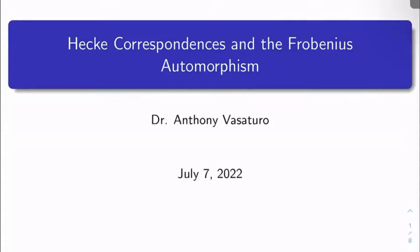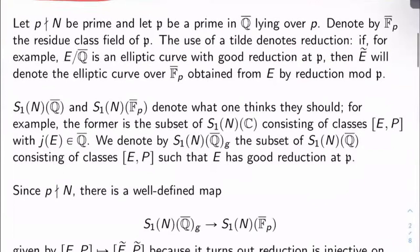We'll start by looking at the reduction map. Let's let N be a positive integer. Let's let p be a prime, not dividing N. Let's let ℘ be a prime ideal in Q̄, the algebraic closure of Q lying over p. Let's let F_℘ be the residue class field ℘.